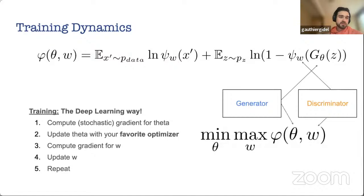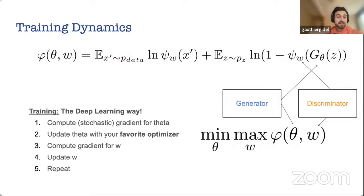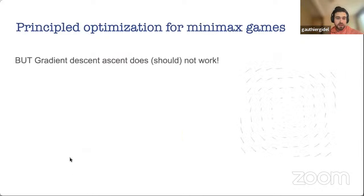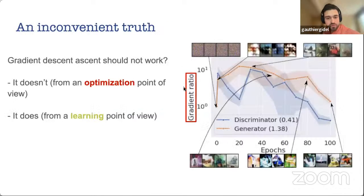Importantly, the metric practitioners track is not the convergence of the optimization method, but convergence in terms of learning performance.